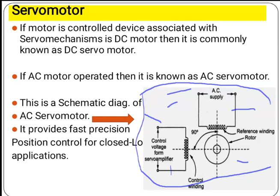The rotor is placed between the two stator windings, which are displaced by 90 degrees. If we want to change the rotation or direction of the motor, we change the phase difference between the two stator windings. This is the function of the AC servomotor.